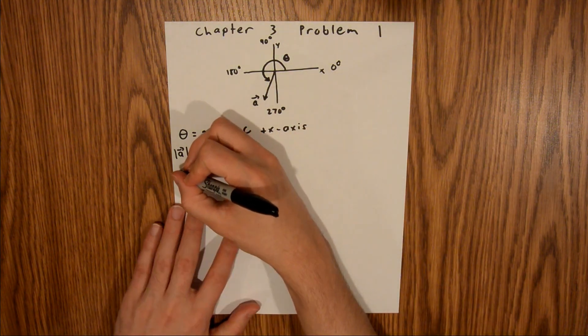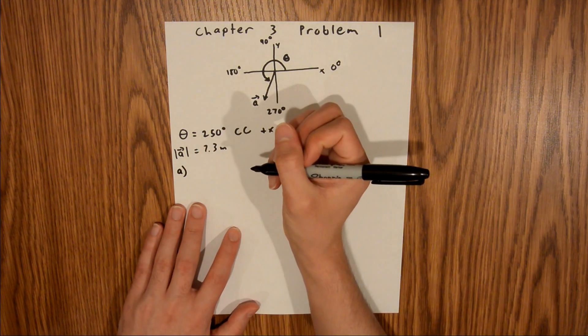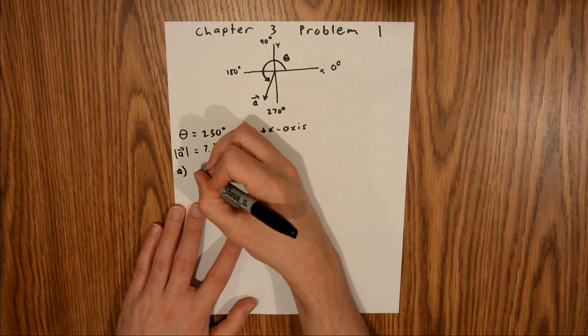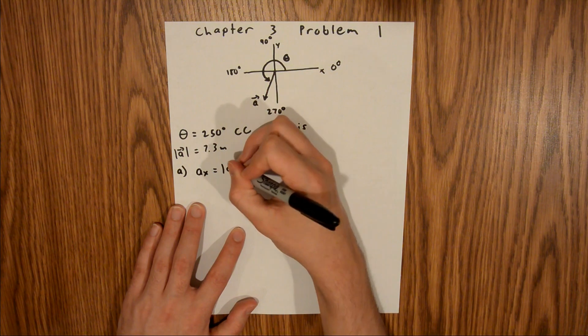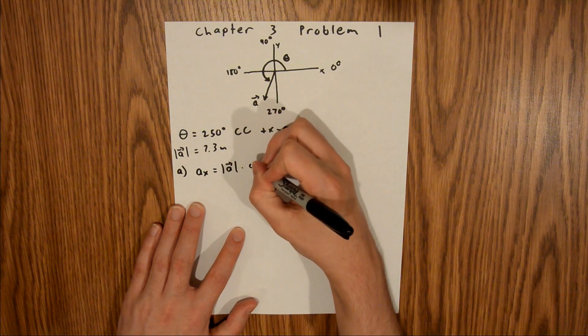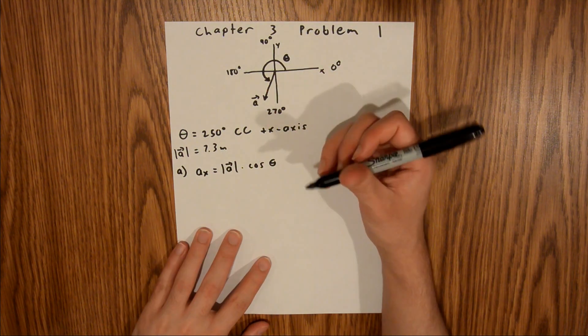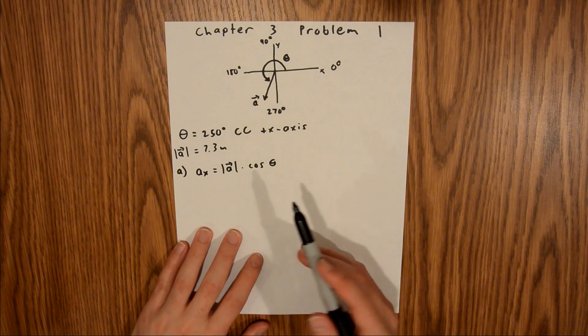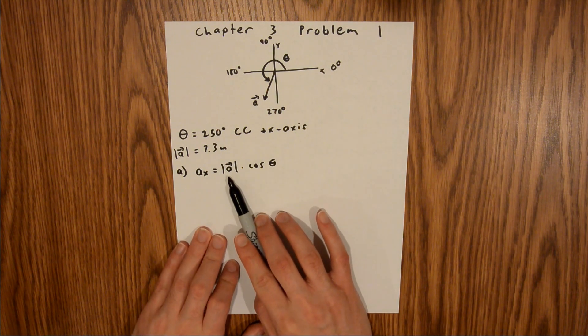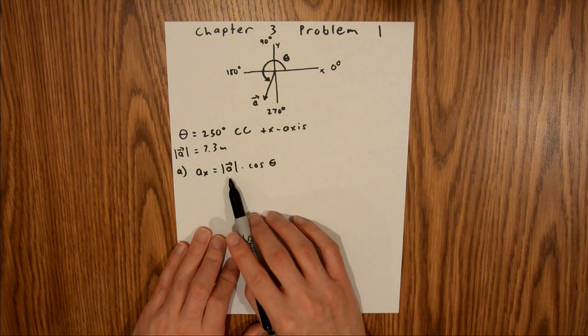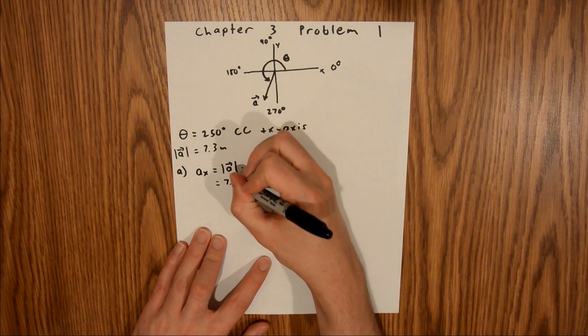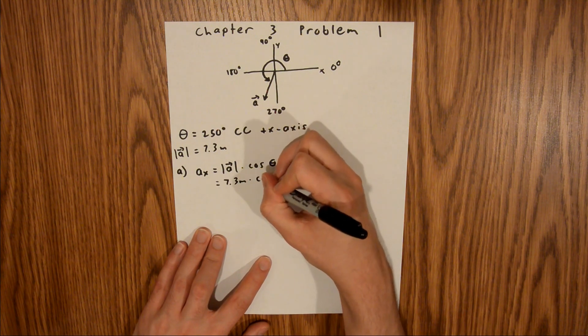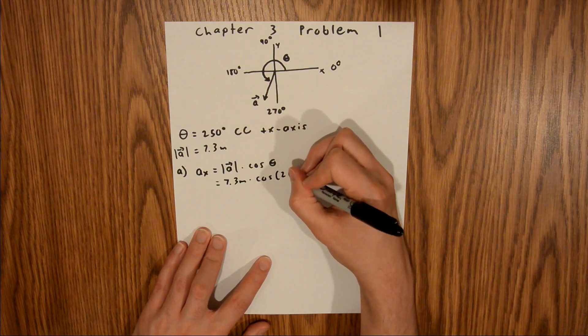And so now for part a, we are asked to find the x component. So a of x is equal to the magnitude of a times the cosine of theta. That is the generic equation for the x component of a vector, the magnitude of a vector times the cosine of the angle. And since we are given both of those values in the problem, we can plug those directly in. 7.3 meters times the cosine of 250 degrees.